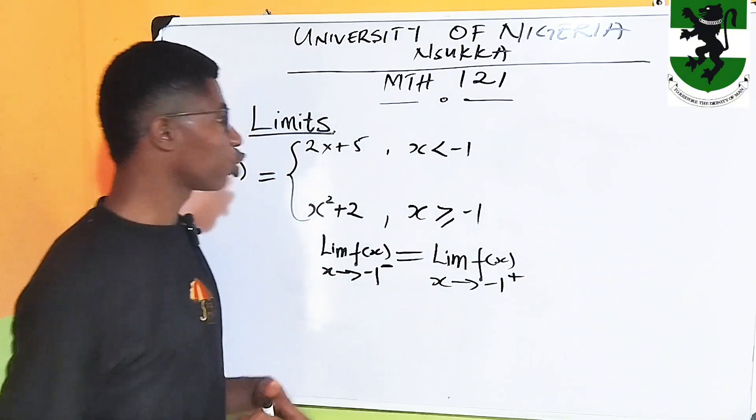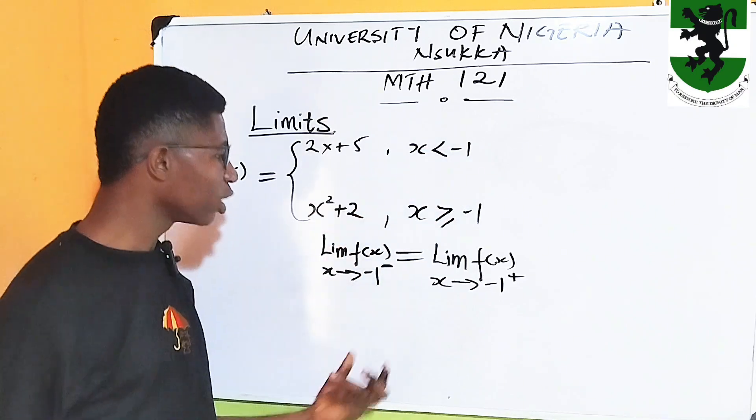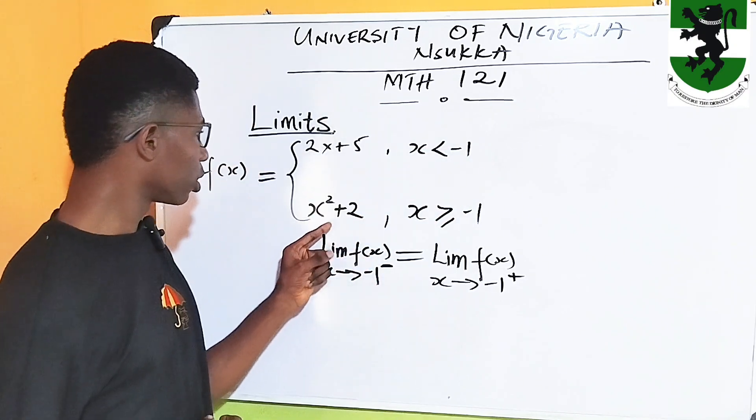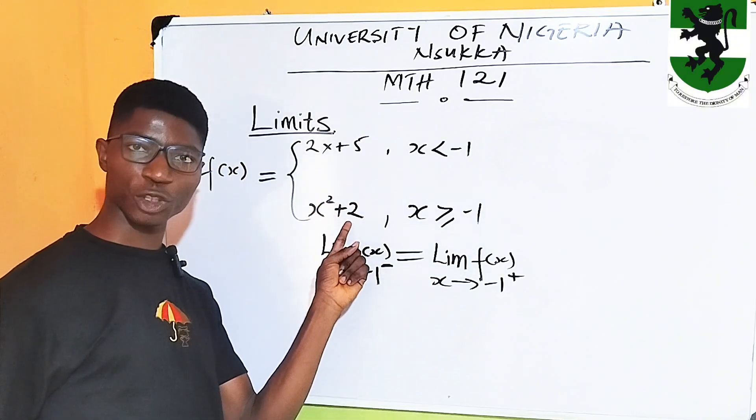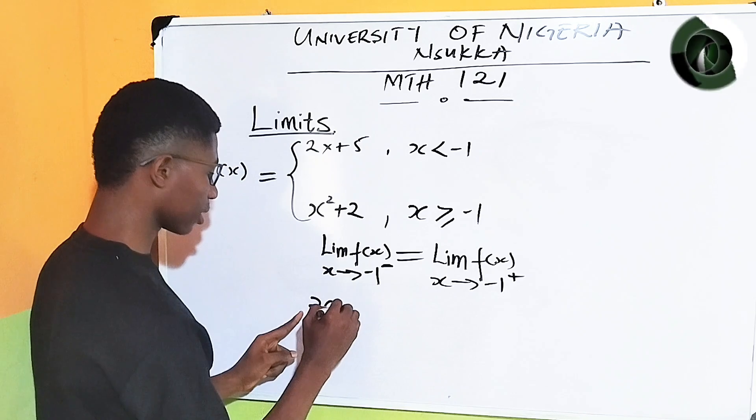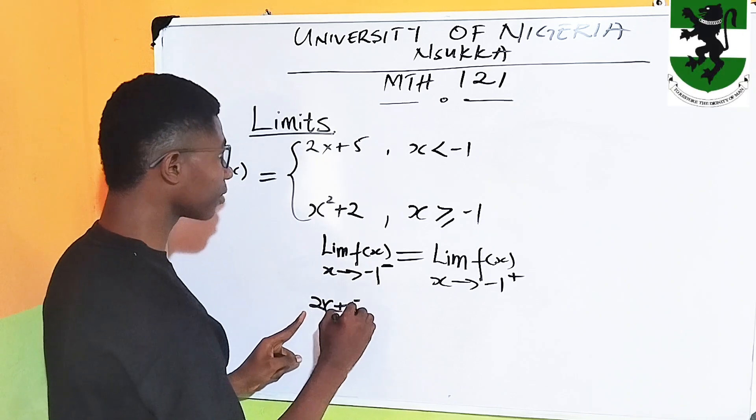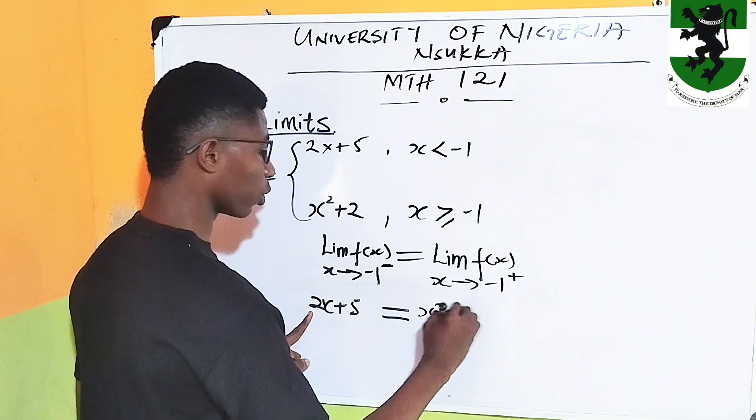That is to say, we are going to substitute this point minus 1 into this expression and equate it to this after substituting minus 1 into this expression. That is, 2x plus 5 must be equal to x squared plus 2.